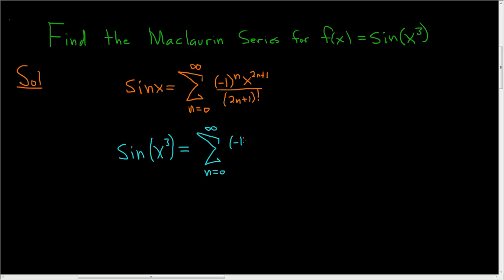We still have the (-1)^n, there's no x's there. But here we have an x so we're going to replace that with x³. So this is (x³)^(2n + 1). And in the denominator we still have (2n + 1) factorial.